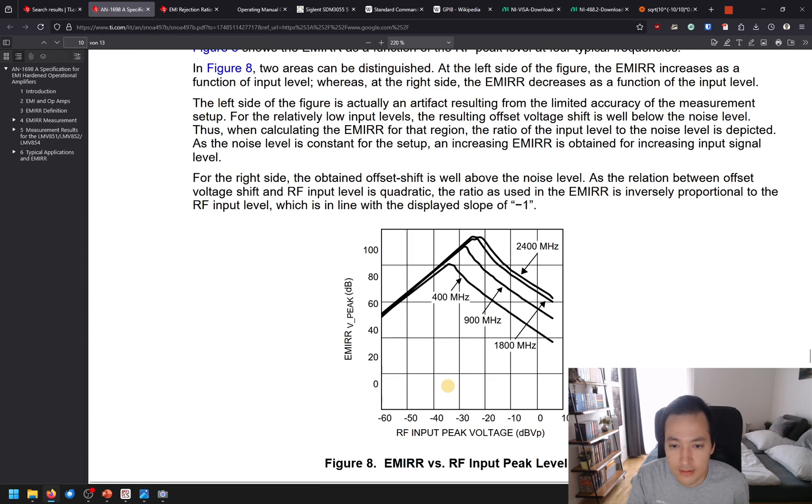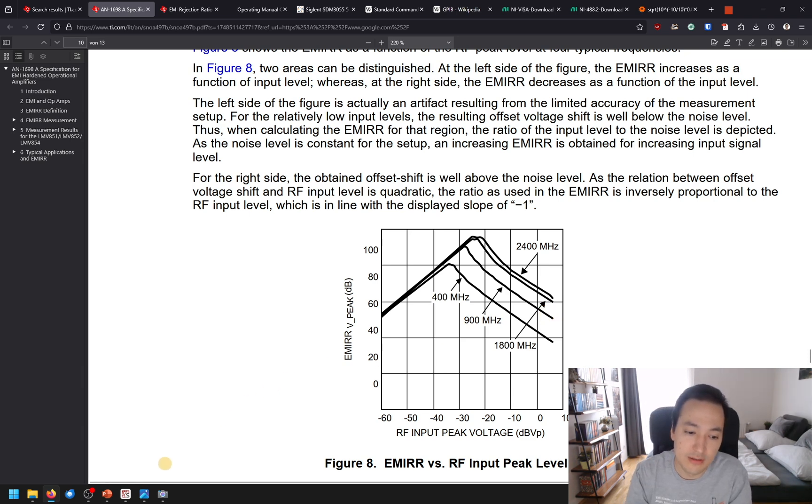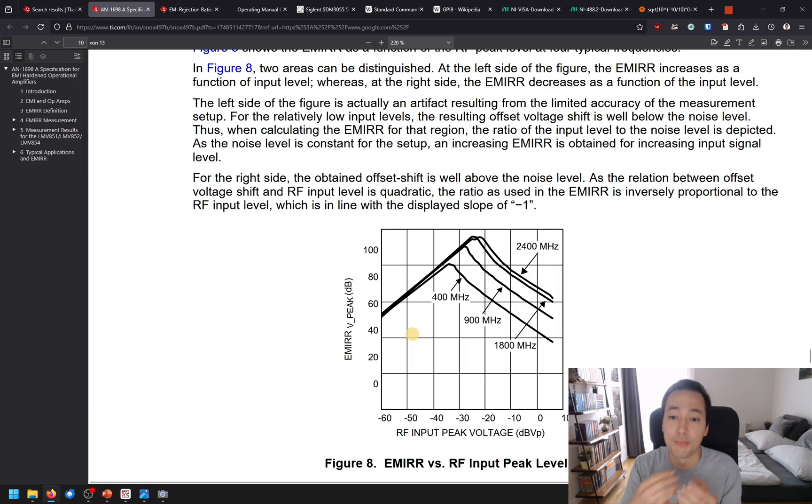Then finally, we have here figure eight. On the x-axis, we are increasing the injected RF signal. On the y-axis, we are looking at the EMI rejection ratio. On the left side, you can see if we apply a very low interference voltage, then the resulting DC offset is so low that we cannot measure it. On the right side, you can see a decrease of the EMI rejection ratio to more RF power we are injecting. This is the reason why we need to use this correction factor on the right to obtain comparable results.